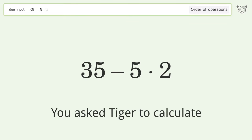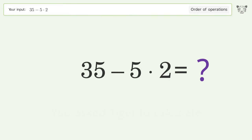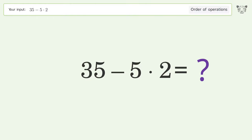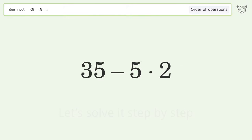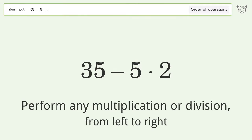You asked to calculate this. It deals with the order of operations. The final result is 25. Let's solve it step by step: perform any multiplication or division from left to right.